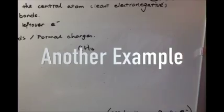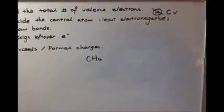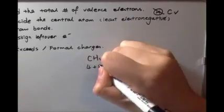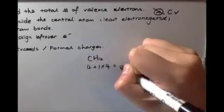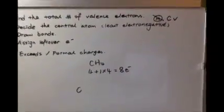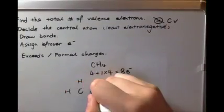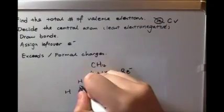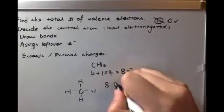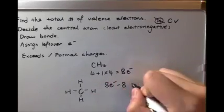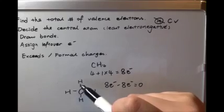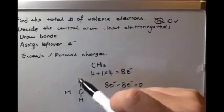As another example, let's do CH4. First, we find the total number of valence electrons. For carbon it's four, for hydrogen it's one, and there are four hydrogens, so four times one is four — giving eight valence electrons total. We decide the central atom: carbon is always in the middle. We put the four hydrogens around it and connect them with straight lines to represent the bonds. Subtracting the eight electrons used in bonds leaves zero remaining.